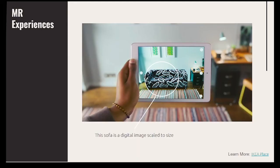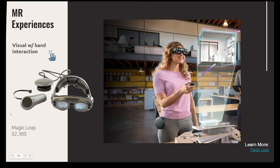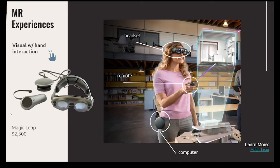Here's an example of an MR app: IKEA Place. When you use this app, it scans the room to know the dimensions of everything, then overlays a digital image of furniture. It needs to know the size of the space to tell you whether the sofa will fit. The Magic Leap device is a visual headset with one hand interaction through the remote. The computer is tethered to the headset with a cable but can be clipped to your pocket, leaving you free to walk around.